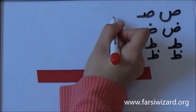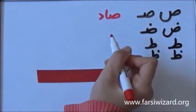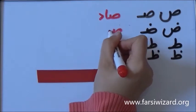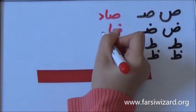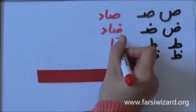Okay, so here I'm just writing the name of each of these letters in Farsi, so you can see actually how they are pronounced. Sod, Zod, Taw, Zaw.